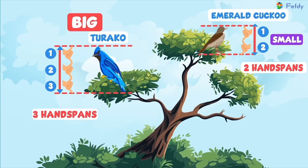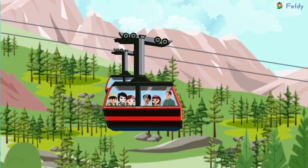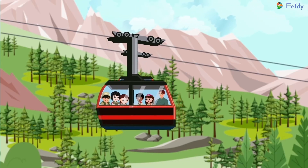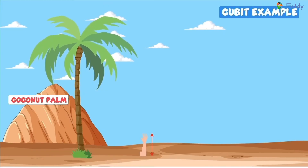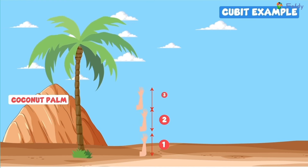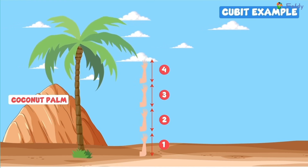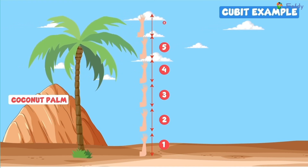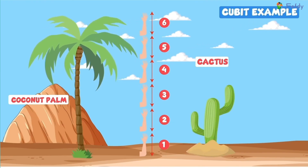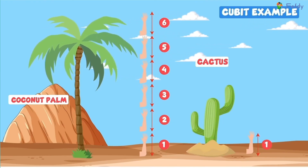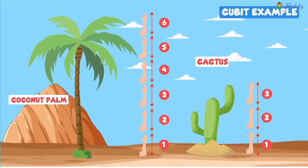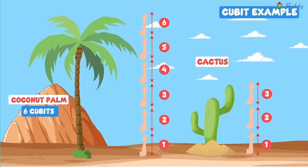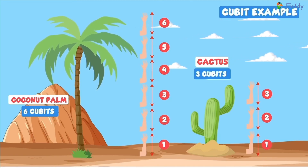Turaco is big and emerald cuckoo is small. Let's see the length of the coconut palm and cactus. Coconut palm: one, two, three, four, five, six. Cactus: one, two, three. The length of the coconut palm is six cubits. The length of the cactus is three cubits. Coconut palm is long and cactus is short.